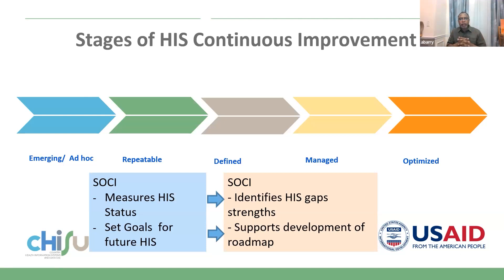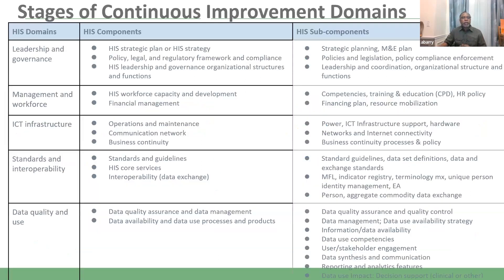We have five core domains: leadership and governance, management and workforce, ICT infrastructure, standards and interoperability, and data quality and use. These five domains are broken down into 13 components and 39 subcomponents. The assessment is focused on the subcomponents — when subcomponents are assessed, the system auto-generates an average score for the component, and from that, a score for the domain.